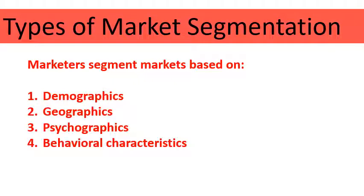Hey class, quick video here on the different types of market segmentation. Market segmentation is when we break down the market into smaller groups — and not just any small groups, these small groups share common characteristics with one another. Here we're going to look at the four different ways that we can group characteristics to create our market segments.